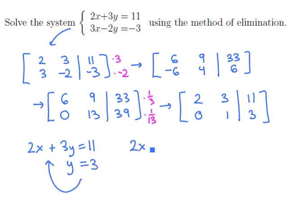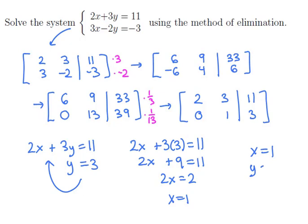If we take y equals 3 and plug it into the top equation, we get 2x plus 3 times y equals 11. So 2x plus 9 is 11, or 2x is equal to 2, and x is equal to 1. So we have the solution x equals 1, y equals 3.